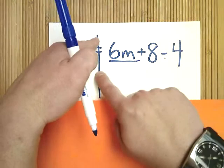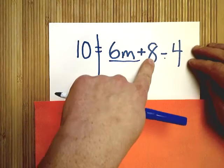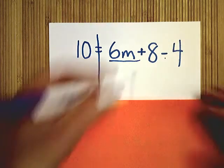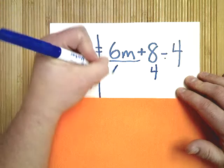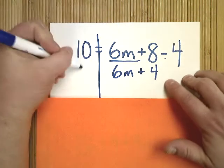So all I'm going to do, since they're on the same side of the line, is read the story. Whatever it says to do, I'm going to do it. Positive 8 minus 4. So 8 minus 4, last time I checked, was just 4. So I'm going to bring this 6m down.